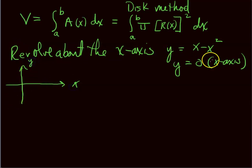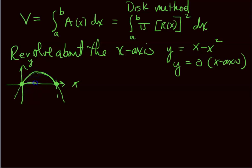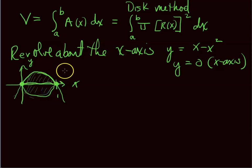For y = x − x², there's a zero at x = 0 and a zero at x = 1. This is a parabola that opens downward. We're interested only in the region between 0 and 1, bounded by y = 0 — the x-axis — and we revolve it around the x-axis.